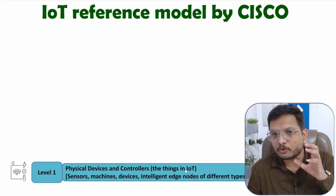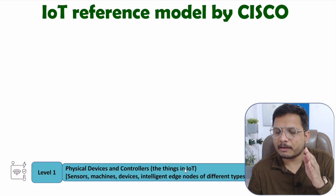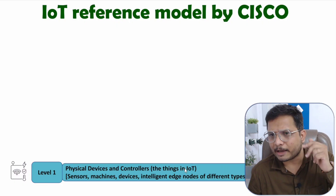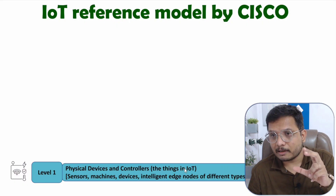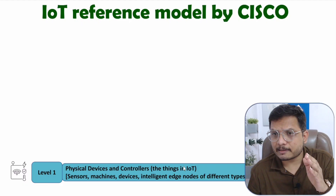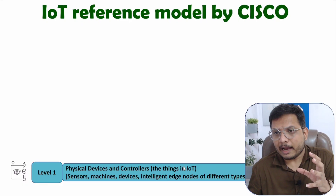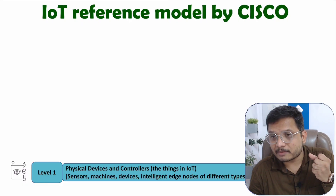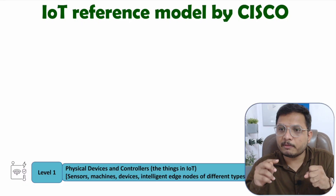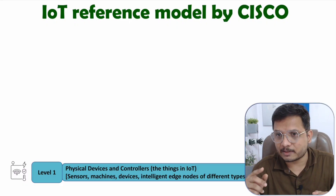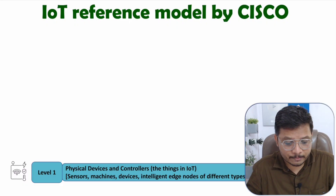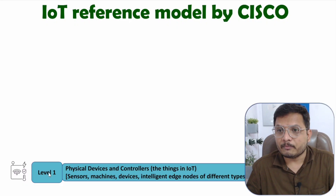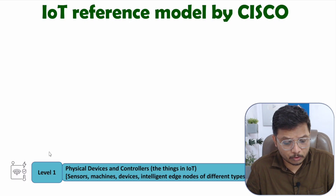Physical devices and controllers are essentially embedded systems containing microcontrollers or microprocessors, along with interfaced sensors, actuators, and machines. Using sensors we sense physical data, and using actuators we provide a physical response. That is what comes under level one.